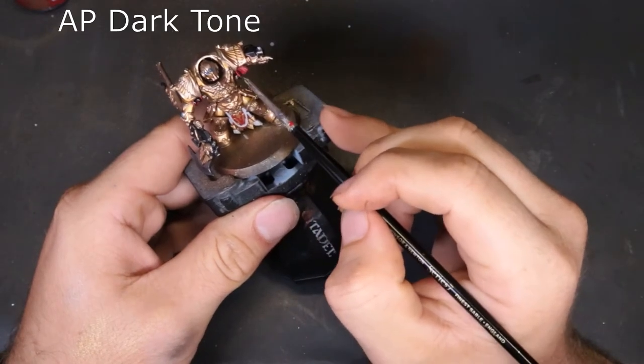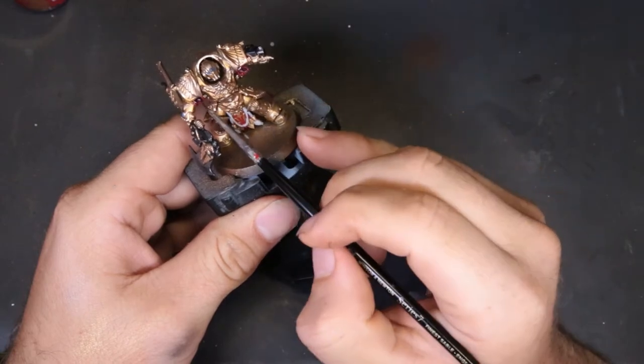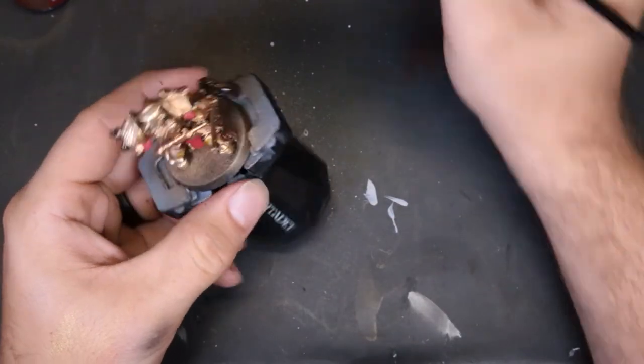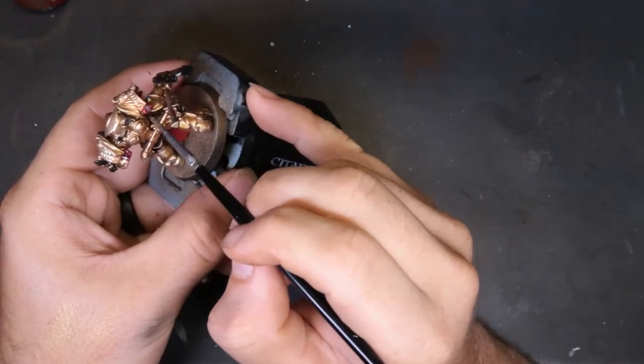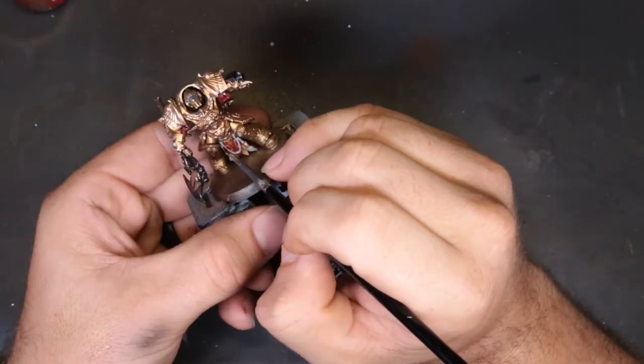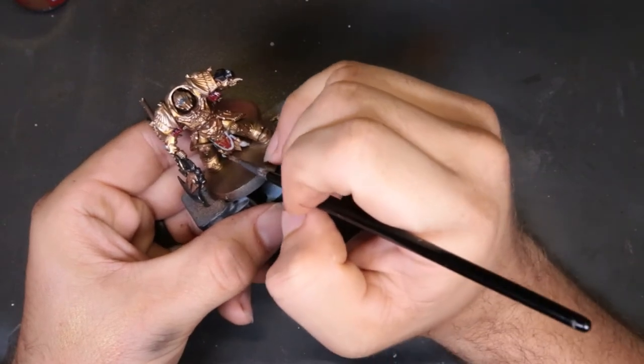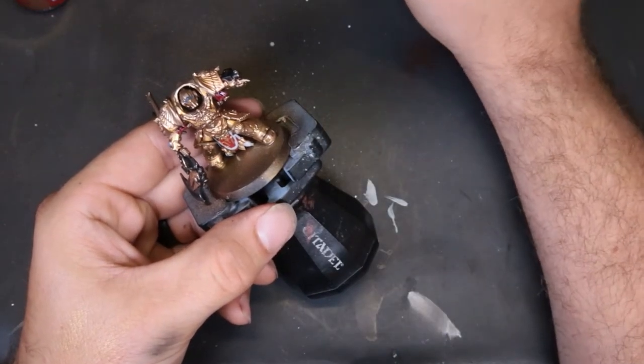So next we're coming through with Army Painter Dark Tone. We're just picking out the tassels and adding a little bit of differentiation in the crevices on those. We're picking out the ropes and then we're picking out any of the metallic bits around the model. So low stress here. If you happen to get some of it on the gold, just try and dry your brush real quick and wick that away from where it's settled. The only thing we don't want this on is the golds. Just be cognizant of that.